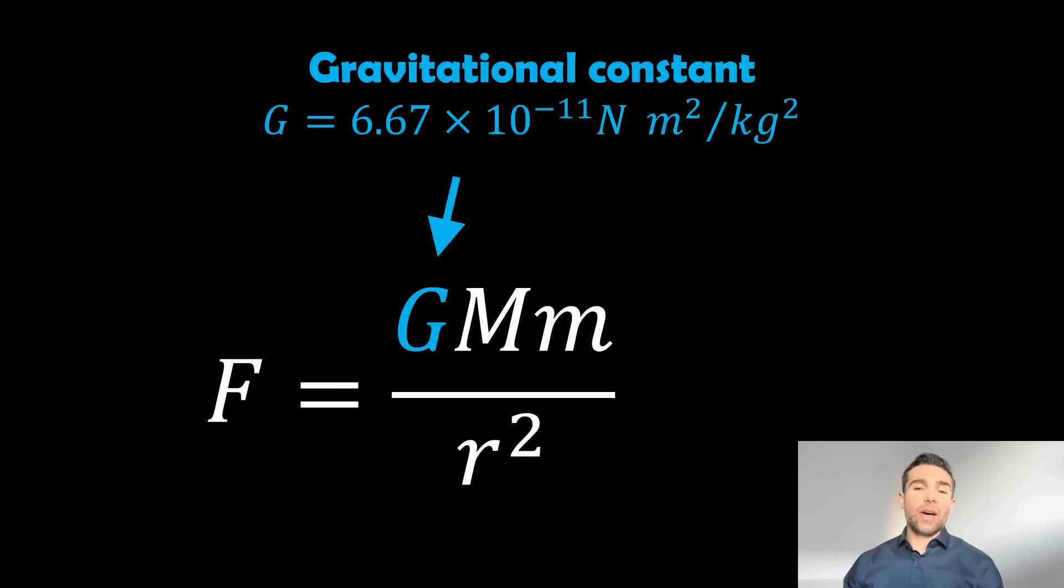And then we have G. Now G is the gravitational constant, and I'm giving it this value here using these units. So it's in newtons, meters, kilograms. But you can get it in various different forms as well.